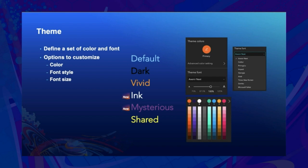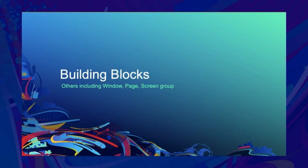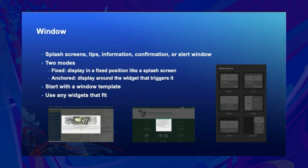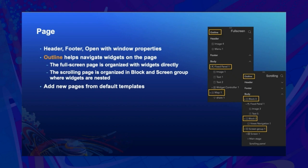A window is for splash screens, information, confirmation, or alerts. You can use it to display a splash screen in a fixed position or show an alert message near a button when clicked. Page is the backbone of Experience Builder — you can turn on the header and footer and open it with a window. The outline becomes handy when widgets are nested, helping you navigate and select the right one to edit.